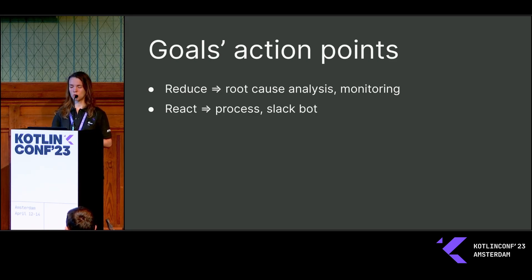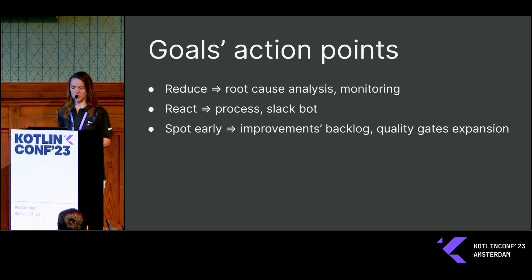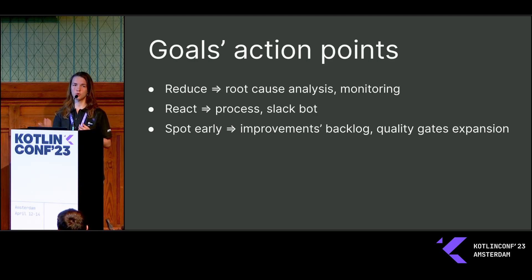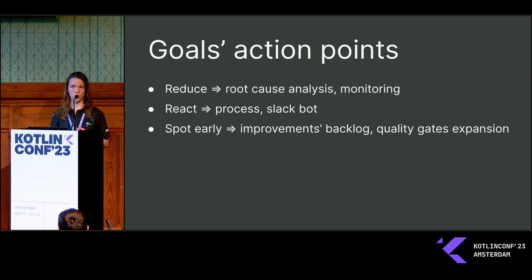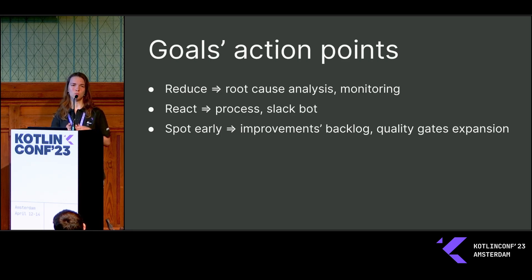Our analytics team re-established monitoring of the regression situation. We created a special process and a Slack bot to help developers keep track of this process and respond to regressions early. It's always about preventive measures, and from root cause analysis we could get action points to improve our system and have fewer regressions — more quality gates, more checks, more automation.